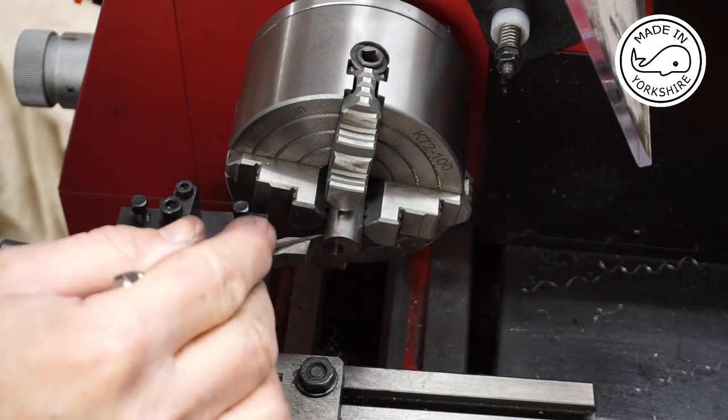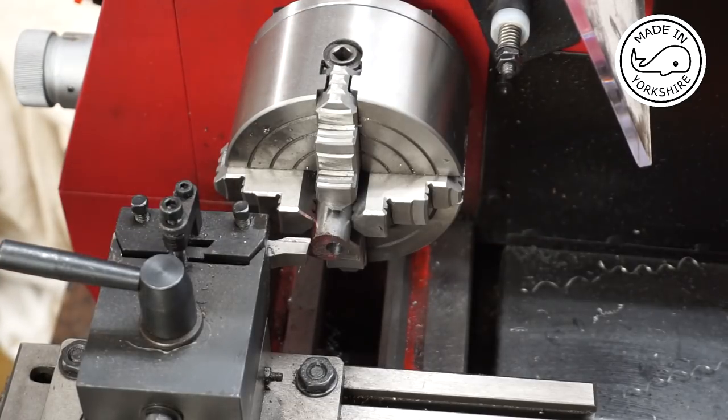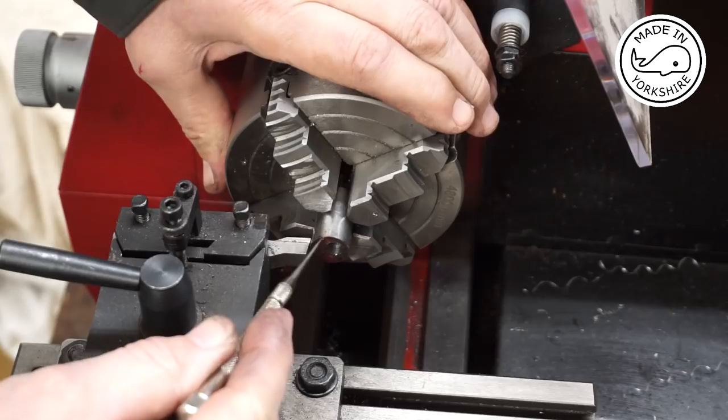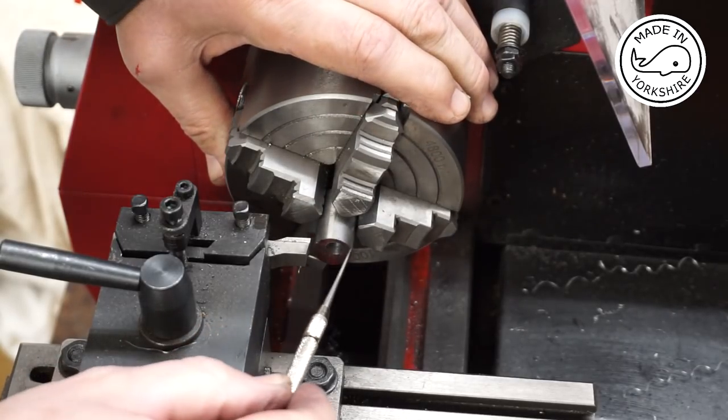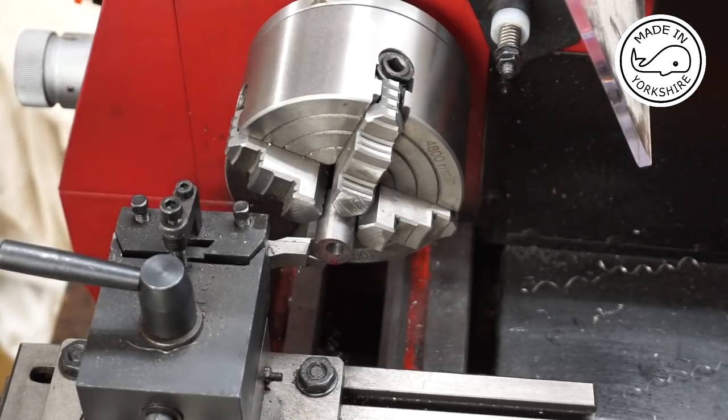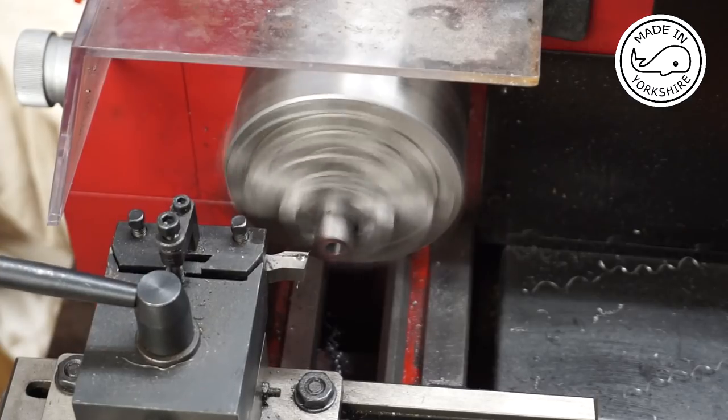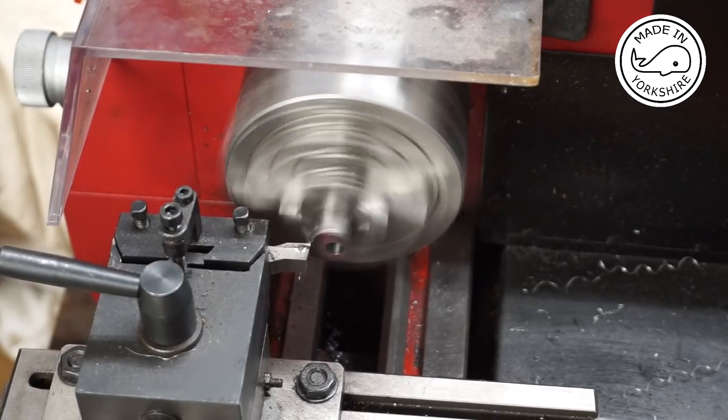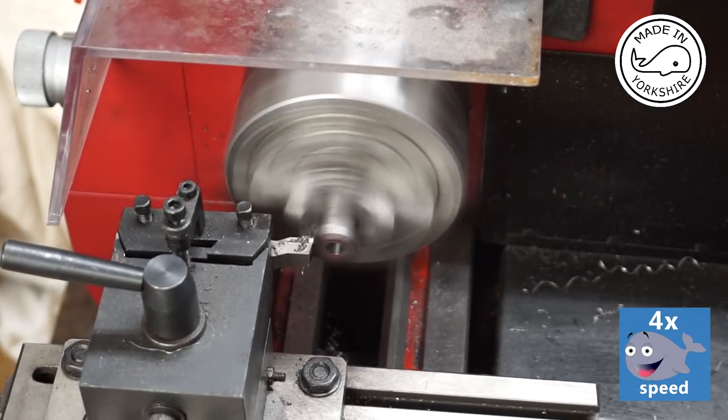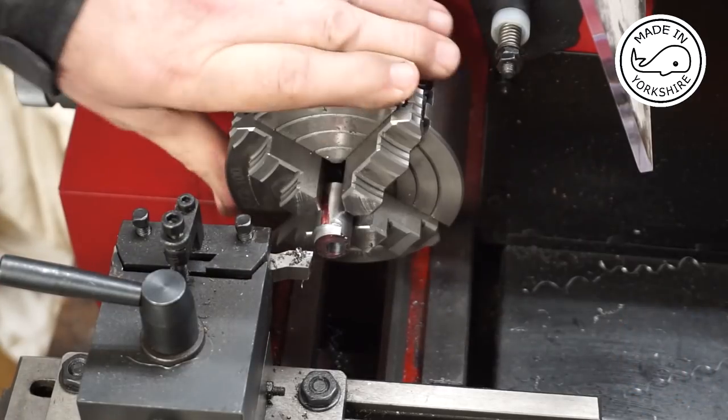This boss needs to be cut to 5/32nds of an inch deep. I've set the depth stop on this side. I'll cut in 10 thou increments and the diameter needs to coincide with that outside edge there. So I'll keep on cutting until I just touch the outside edge. That's the plan anyway. Gradually taking shape.